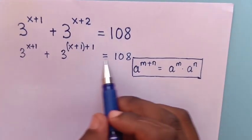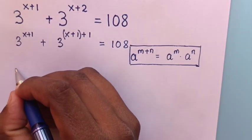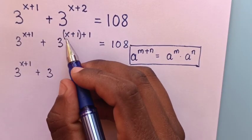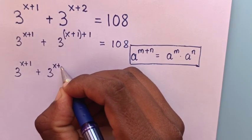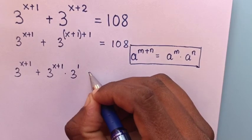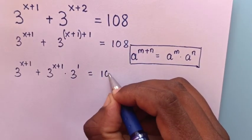Then in here, in our equation, it will be 3 power x plus 1 plus 3 power this x plus 1 times 3 power 1 is equal to 108.